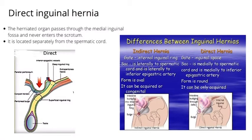Direct inguinal hernia: the herniated organ passes through the medial inguinal fossa and never enters the scrotum. It is located separately from the spermatic cord.